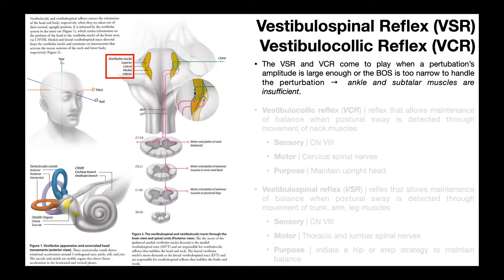Looking right here — vestibular branches of cranial nerve 8 — these axons are going to synapse with neurons whose cell bodies are located within the medial vestibular nucleus. Those axons then project from the brainstem inferiorly as the medial vestibular tract. Those tracts descend through the brainstem, ultimately into the spinal cord, where they synapse with other neurons that control muscles in the neck. The neurons from the medial vestibular nucleus ultimately control muscles of the neck on either side, exiting on both sides of the spinal cord from level C1 down through C4.